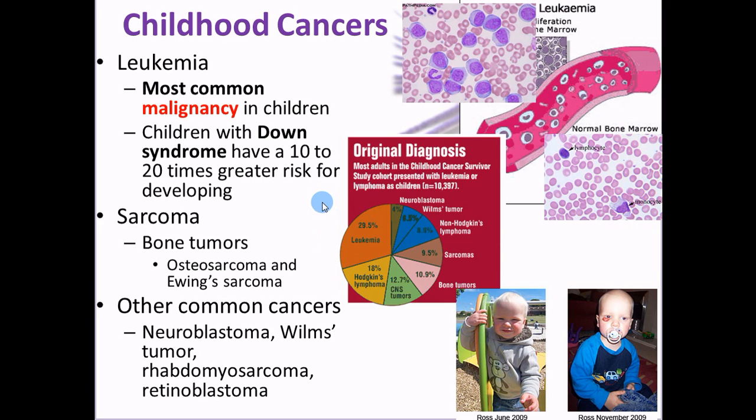Next, sarcomas — remember, sarcomas are from connective tissue. Common sarcomas are bone tumors like osteosarcoma or Ewing sarcoma. Ewing sarcoma is a malignant small round blue cell tumor — it's a rare disease found in bone or soft tissues, usually the pelvis, femur, or humerus. They're called blue cell tumors because when put under a microscope slide, they stain really blue very well.